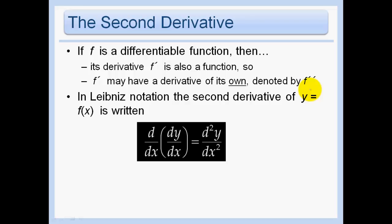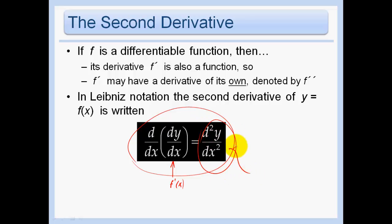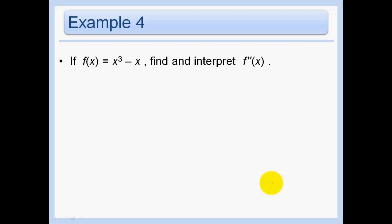If f is a differentiable function, then its derivative f prime is also a function. So f prime may have a derivative of its own, which is denoted by f prime prime. In Leibniz notation, the derivative of the derivative — this was f prime of x — and we're saying the derivative of the derivative, and we just write it as this; this is f prime prime. So let's go ahead and find f prime prime. We can use our shortcut: we know f prime of x is 3x squared minus 1, and so f prime prime is going to be 6x.